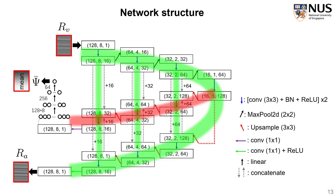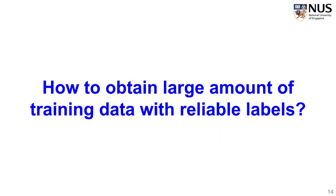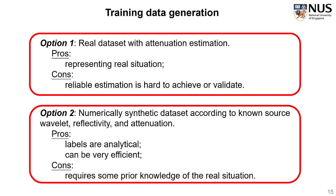Now we have the neural network, the next question will be how to obtain the large amount of training data with reliable labels. There will be basically two options. Option one is that we can use the real data set in which the attenuation estimation and compensation have been done properly. The advantage of this option is the real data set can represent the real situation, like the reflectivity. But the disadvantage is that the reliable estimation of attenuation is hard to achieve or even validate. On the contrary, option two is to numerically synthesize cross-bounding RA, RV, and the ψ. Then, the inputs and outputs are always analytically cross-bounding to each other, guaranteeing the labels are always correct.